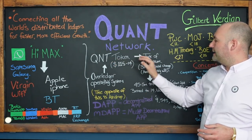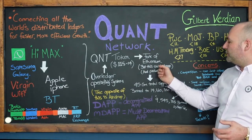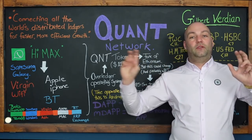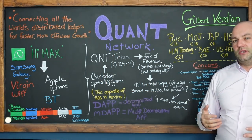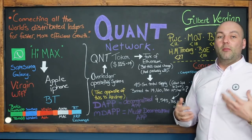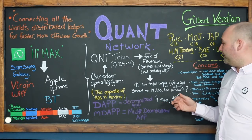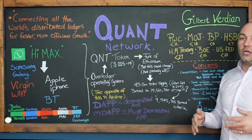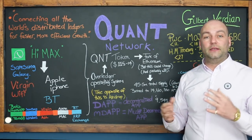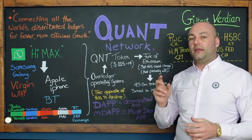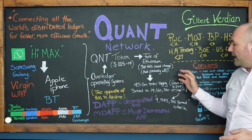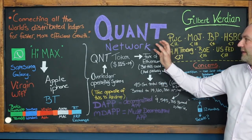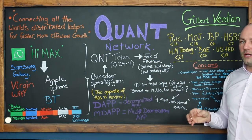The QNT token is the native token of the Quant Network, used simply to pay for transactions on the network in Overledger or to pay the annual subscription. The QNT token is a fork of Ethereum — it's built on Ethereum — but this could change and probably will. They probably chose Ethereum because it was the go-to project at the time, but potentially QNT could move to Ethereum 2 or even Hedera Hashgraph, which is now open source.